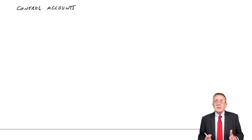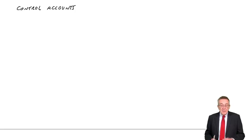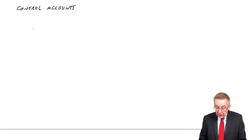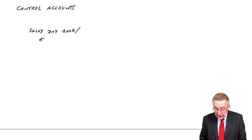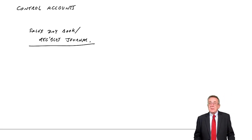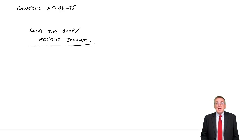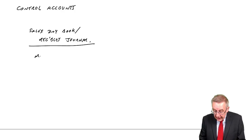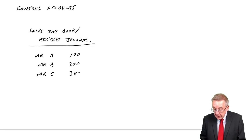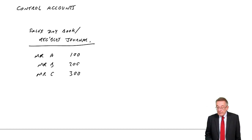Suppose we were making some sales on credit. If you remember from books of prime entry, what we do first of all is list them in the sales day book - or the receivables journal, same thing. We'd list them, and perhaps we made just three sales: Mr. A, we sold 100; Mr. B, 200; Mr. C, 300. Obviously there'll be loads more - I want to keep this very short. But all the way through the month, we'd be listing the sales on credit. But so far there'd be no double entry.